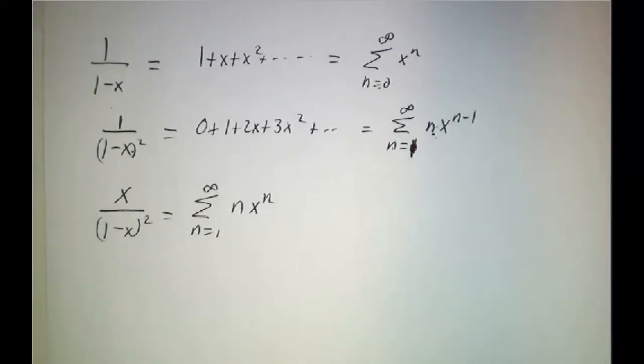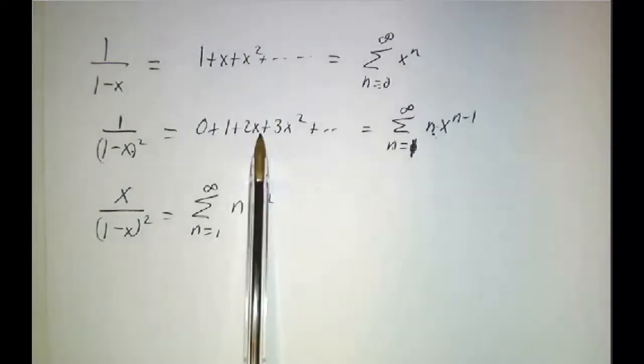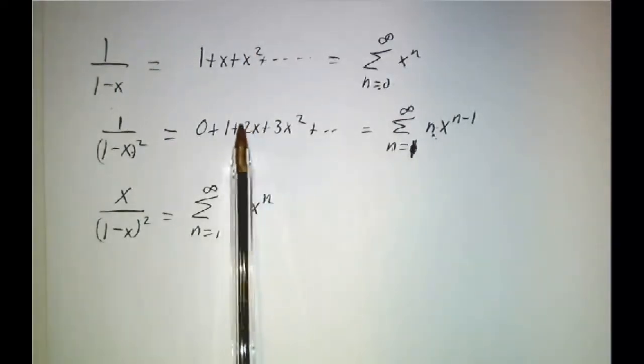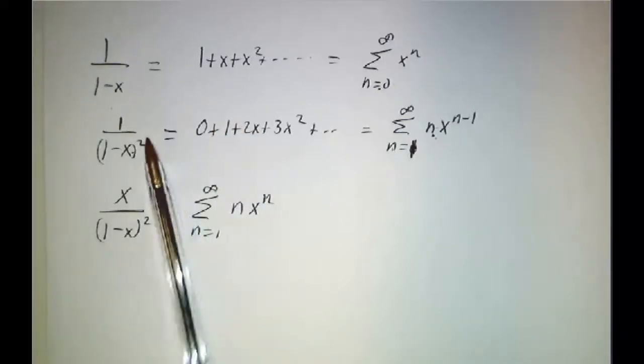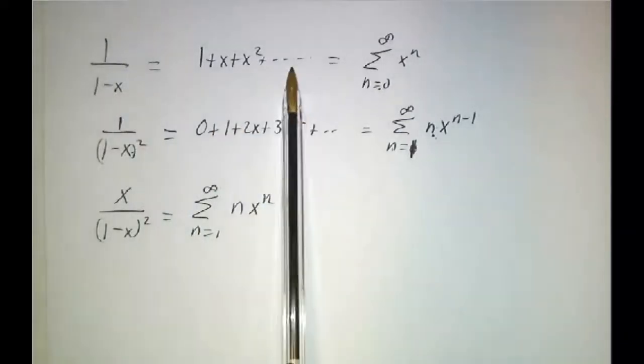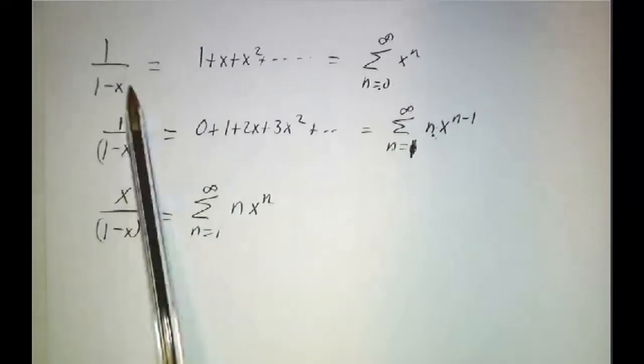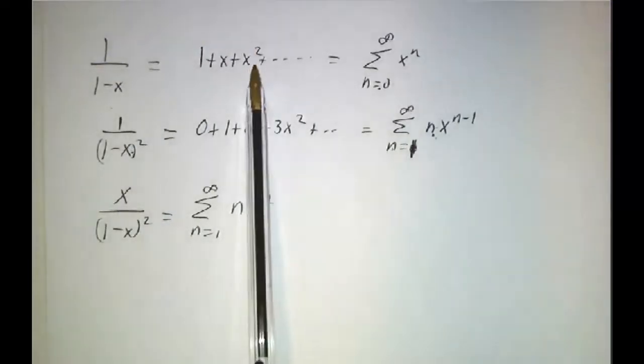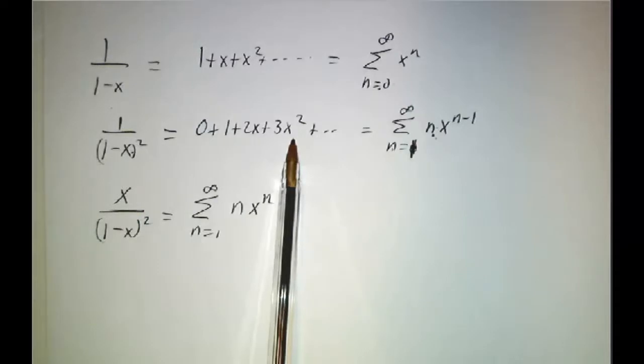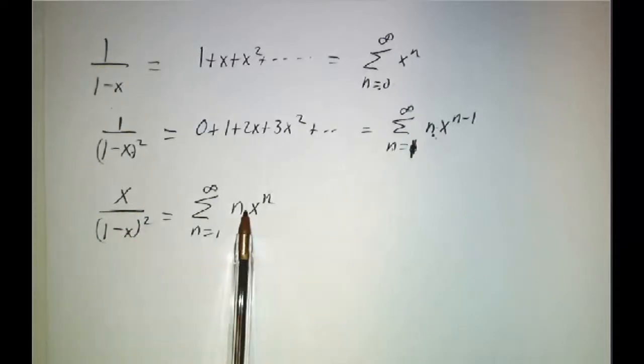Now, I would not expect you to be able to think of this trick all by yourself. But you should be able to understand it when it's presented to you. Oh yeah, that's the Taylor series. You're allowed to take derivatives of both sides of a Taylor series, one term at a time. So this equals this, multiply through by x, this equals this.